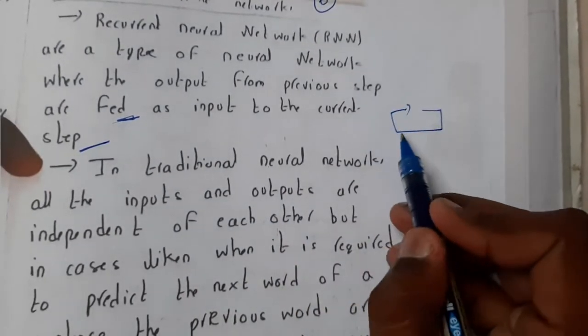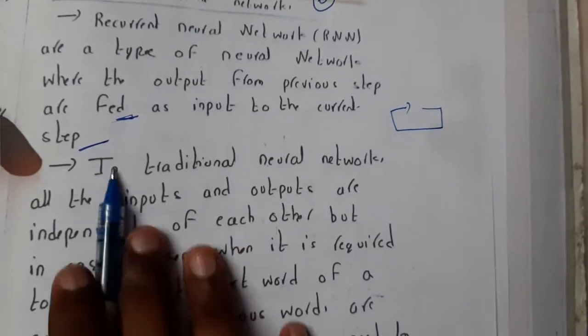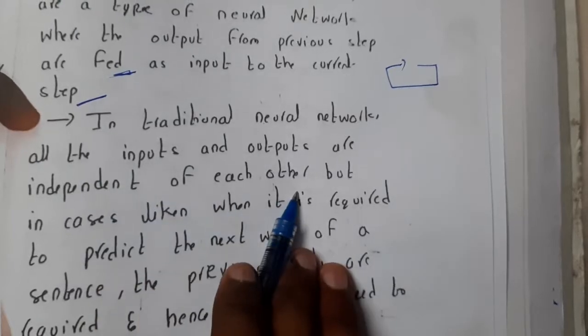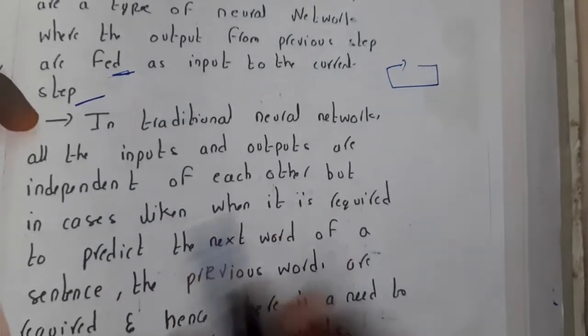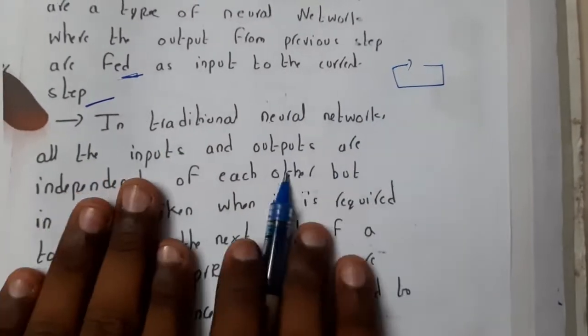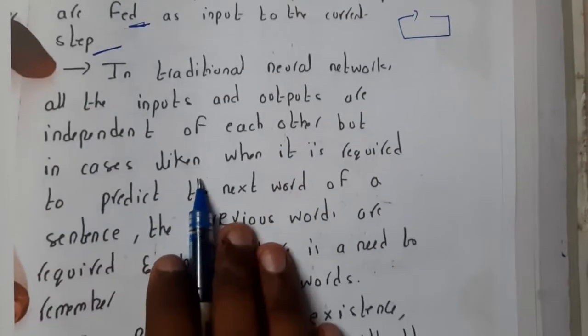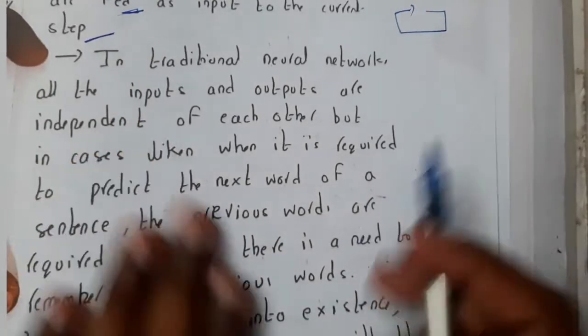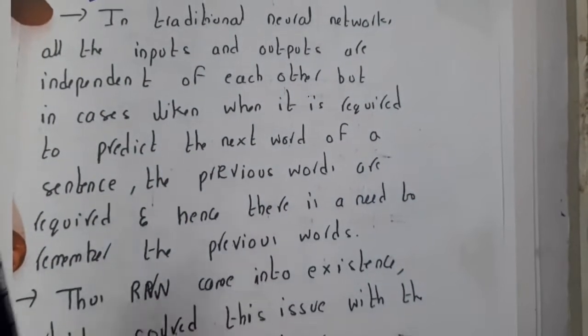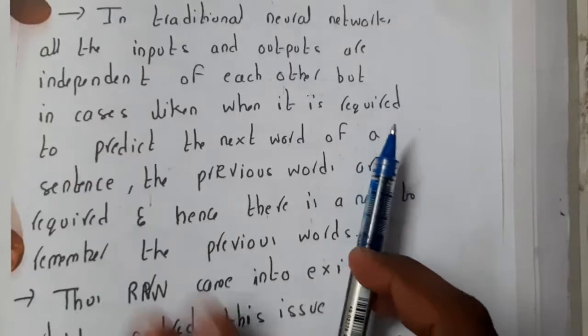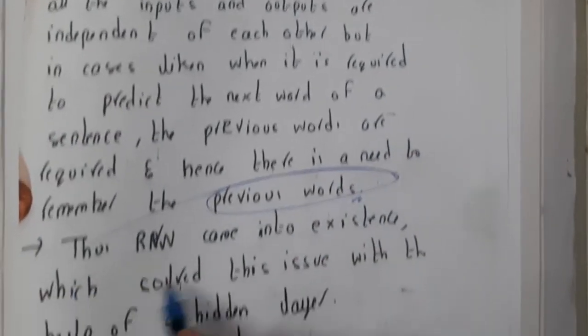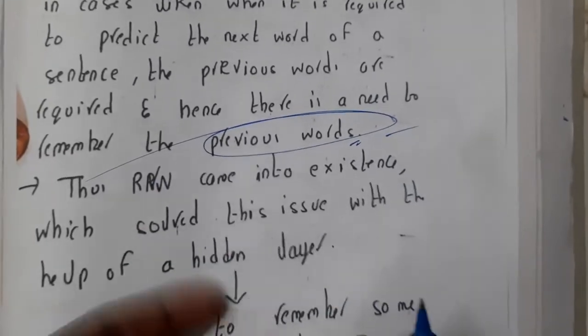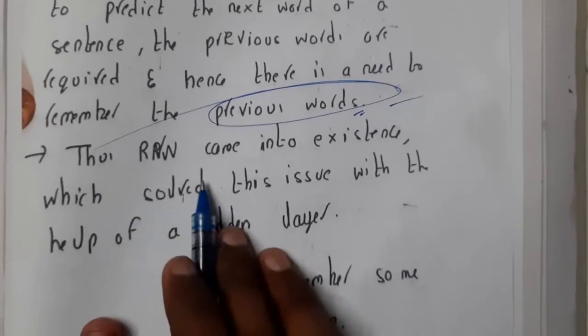In traditional neural networks all the inputs and outputs are independent of each other. But in cases when it is required to predict the next value with the help of the previous word, at that moment the previous output is really important. So in these situations, recurrent neural networks came into existence.